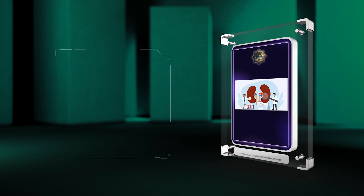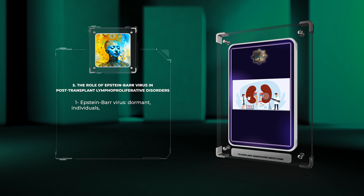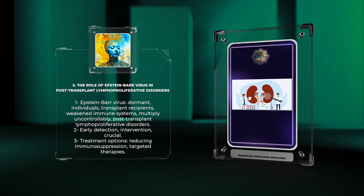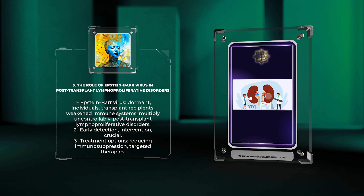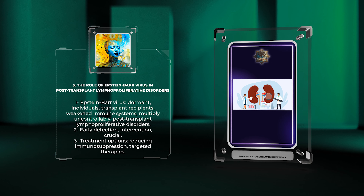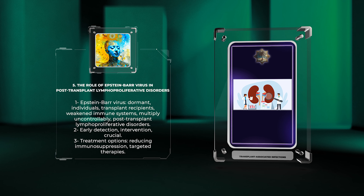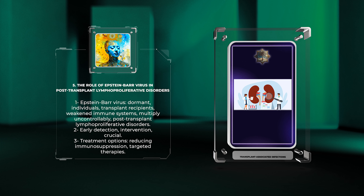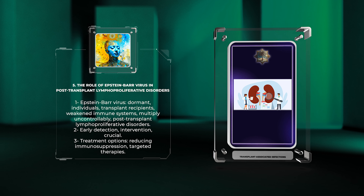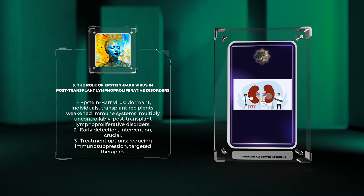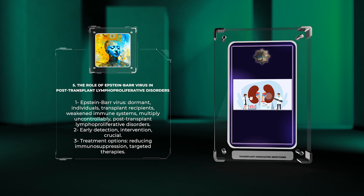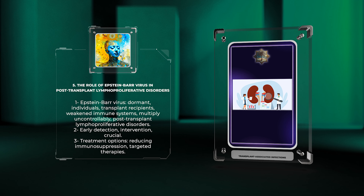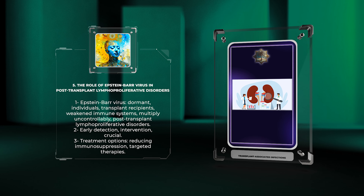The Epstein-Barr virus is often dormant in individuals, but in transplant recipients with weakened immune systems, it can multiply uncontrollably, leading to post-transplant lymphoproliferative disorders. Early detection and intervention are crucial, and treatment options include reducing immunosuppression and targeted therapies.